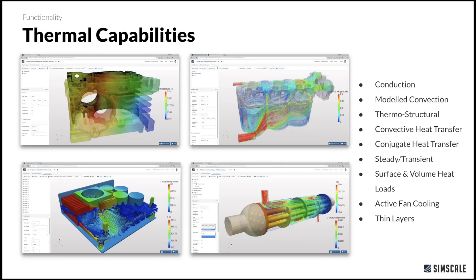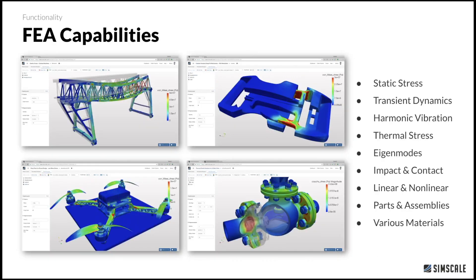For thermal capabilities, you can simulate conduction, convection, convective heat transfer, conjugate heat transfer, and active fan cooling. When it comes to FEA, you have several options. You can start with a simple static stress analysis, use it for transient dynamics, determine thermal stresses and eigenmodes, perform impact and contact simulations, and simulate not only linear but also nonlinear behavior. You can use SimScale for parts as well as assemblies, and there is a variety of material options available.